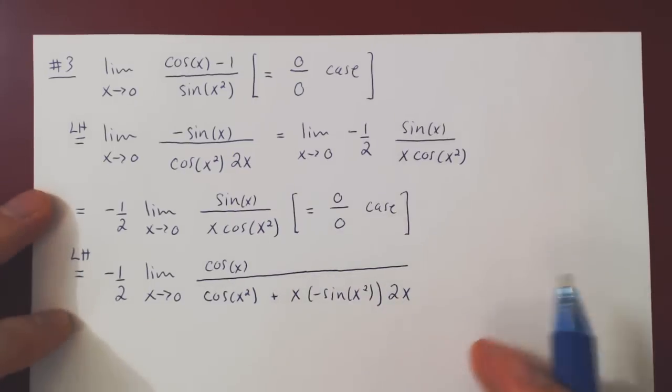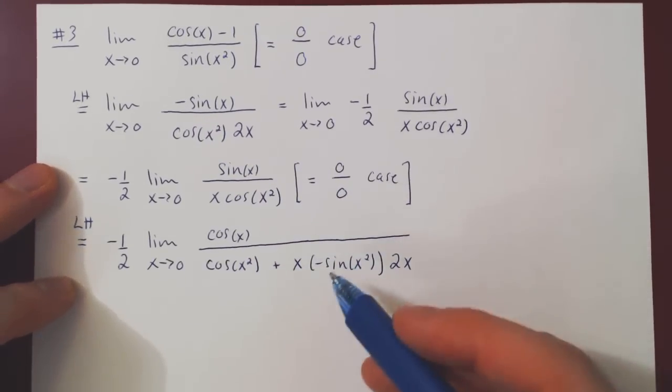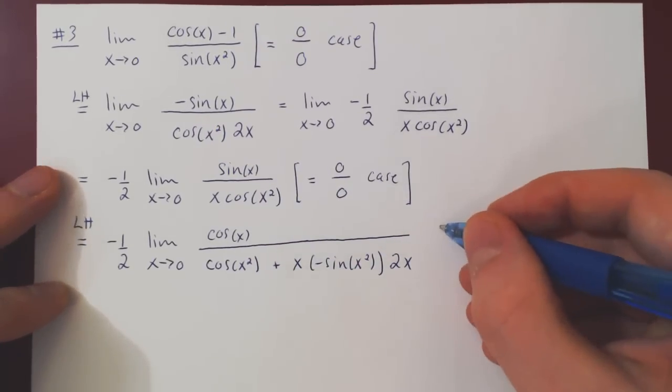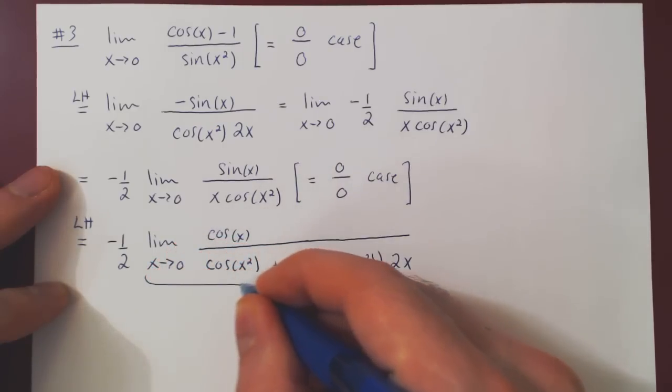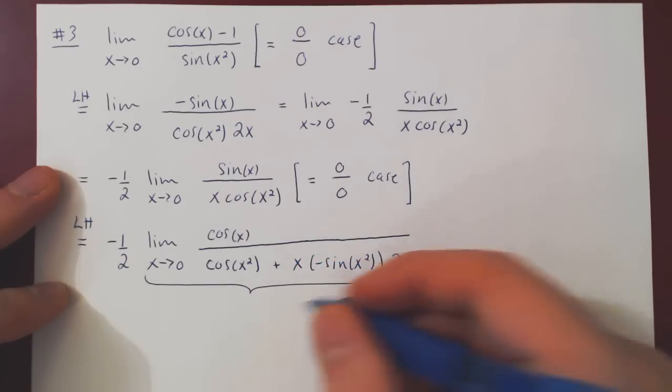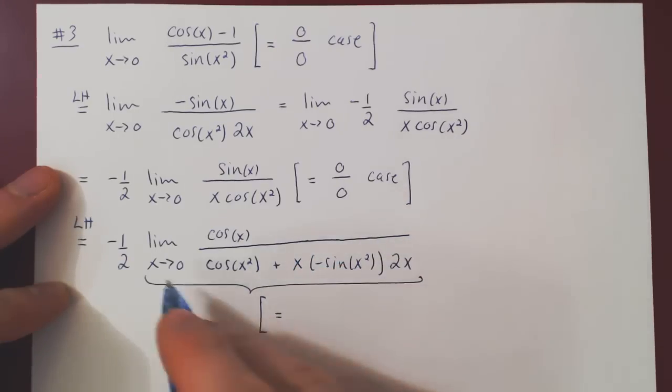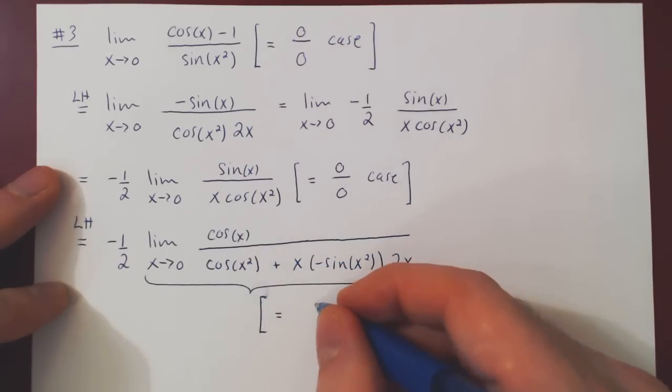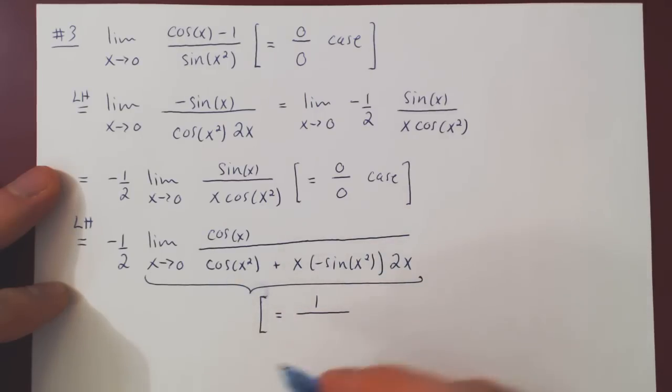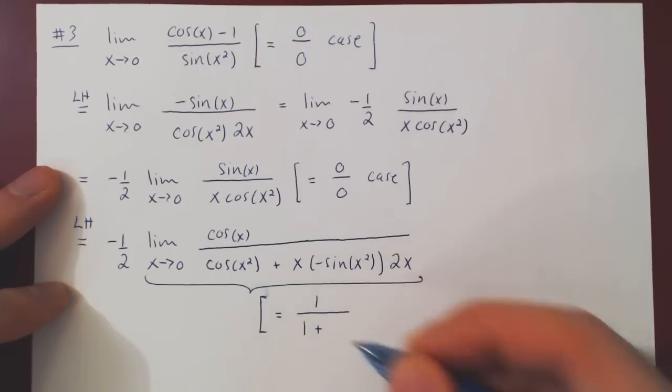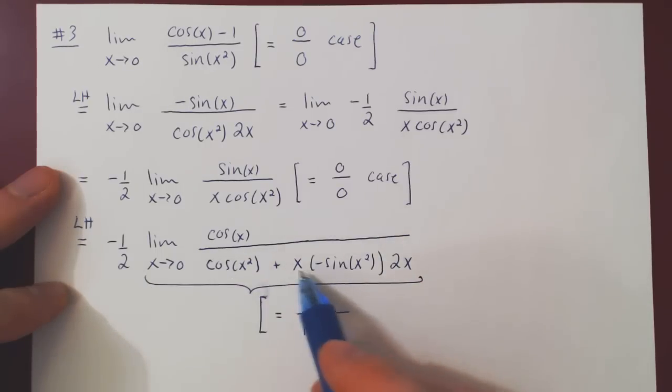Now this may look bad, but it's actually quite simple. If we look at our case with this limit, cos of 0 is 1, cos of 0 is 1 plus, and as x goes to 0, 0 times 0 times 0, this term vanishes.